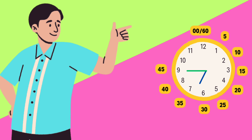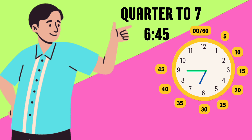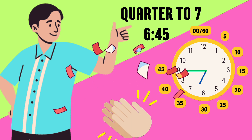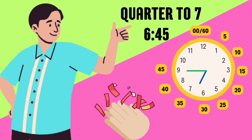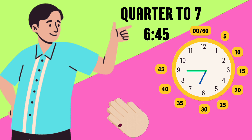If the hour hand is near seven and the minute hand is on nine, what's the time? The time is quarter to seven. Great job — you're becoming a time-telling expert!